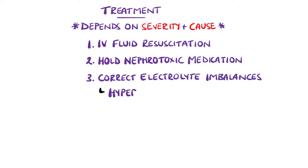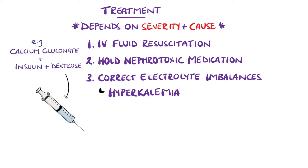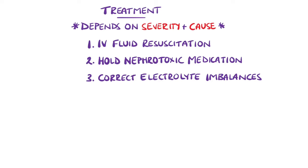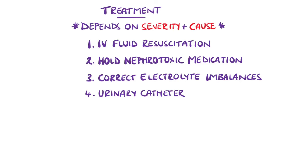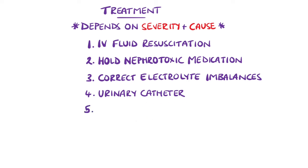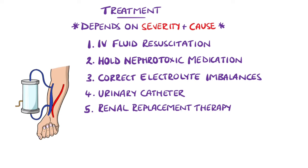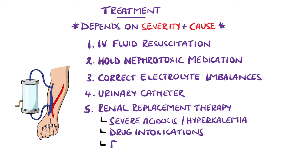For example, hyperkalemia can be treated with calcium gluconate to stabilize the myocardium and reduce the risk of arrhythmia, alongside insulin and dextrose to reduce potassium levels while maintaining blood glucose. In obstructive causes, this should generally be relieved by a catheter if the obstruction is a bladder outlet obstruction. Urine output alongside fluid intake should be measured with daily weights, and renal replacement therapy, such as hemodialysis, is indicated in some cases, such as severe acidosis or hyperkalemia, drug intoxications, or in cases refractory to medical treatment.